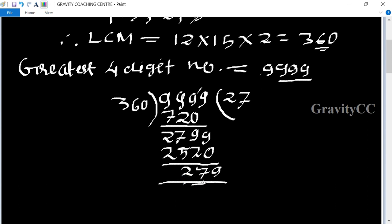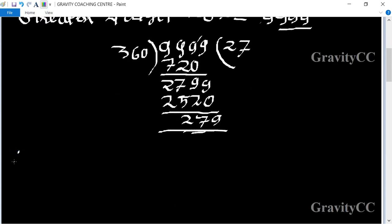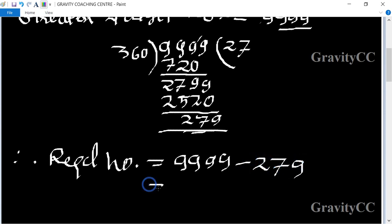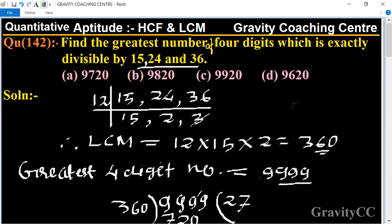Therefore, the required number equal to 9999 minus the remainder 279, so equal to 9720, which is the required answer. 9720, so option A is the correct answer.